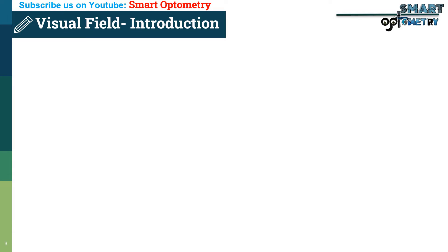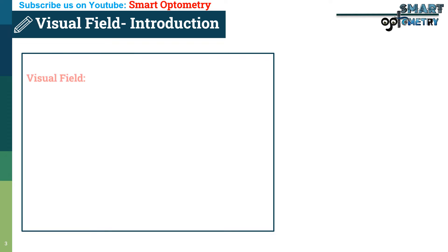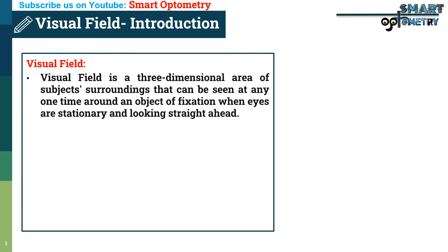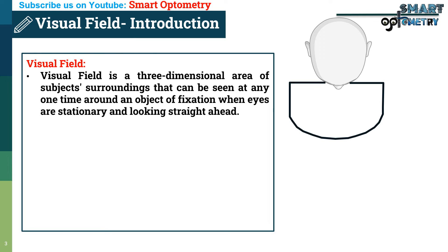To understand Perimetry, we first need to know what is visual field. Visual field is a three-dimensional area of a subject's surroundings that can be seen at any one time around an object of fixation when eyes are stationary and looking straight ahead.